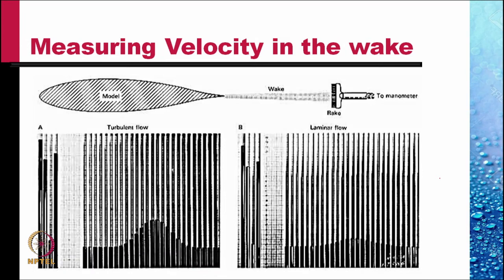This is an arrangement in which we measure the velocity of the flow in the wake of a streamlined body. We use a rake of pitot tubes in the wake of the body. The tubes come out and are connected to the various tubes of the manometer — a reservoir type of manometer. The first picture shows a turbulent wake and the second shows a laminar wake.